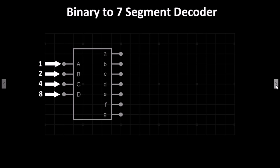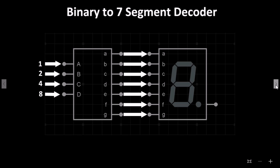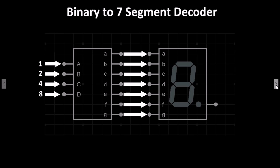The output has 7 pins and these match up with the 7 Segment LED display. As this is a single digit display, if the value of our input is greater than the number 9, it will start to display the letters A through F. This type of numbering system is called hexadecimal.